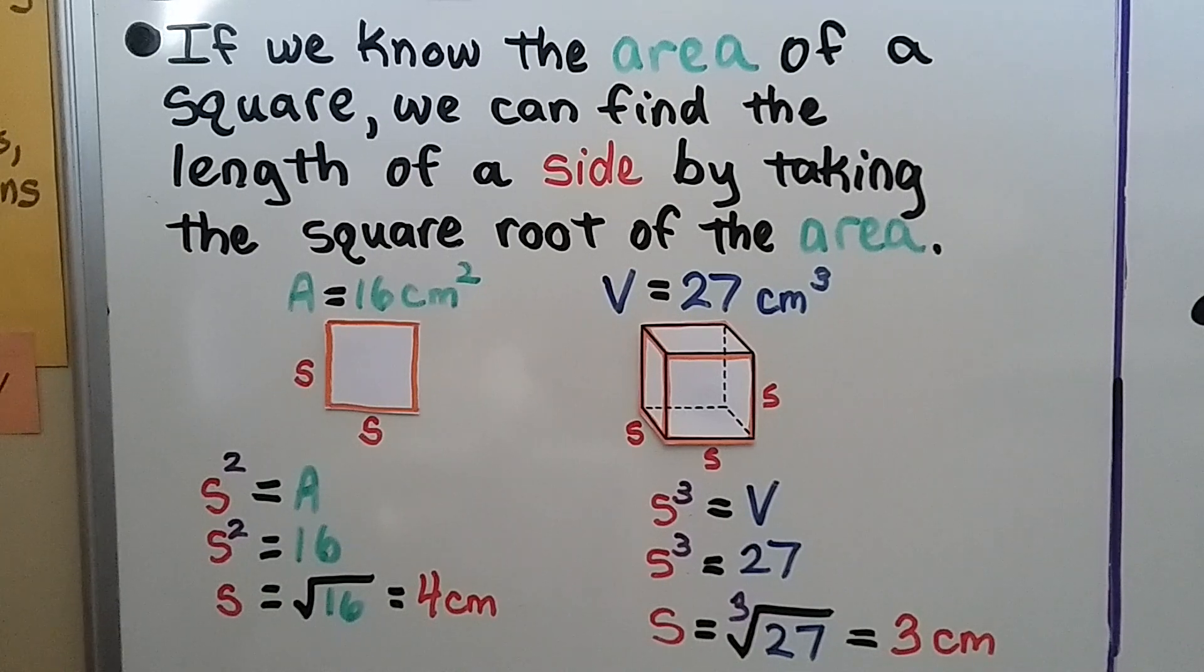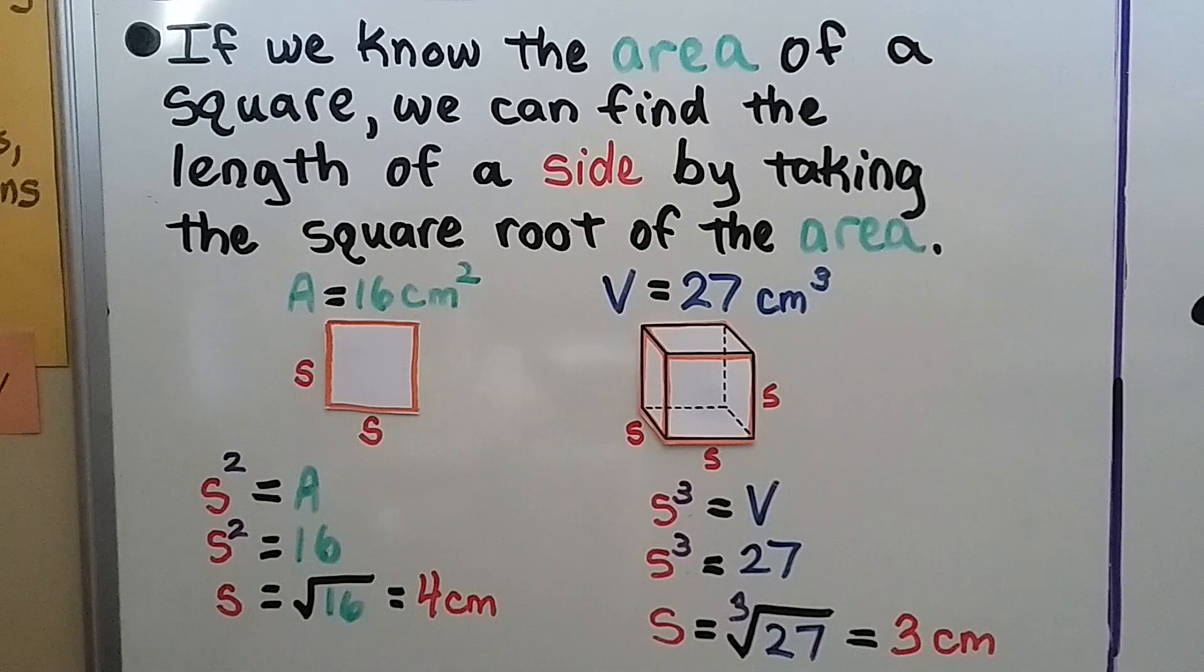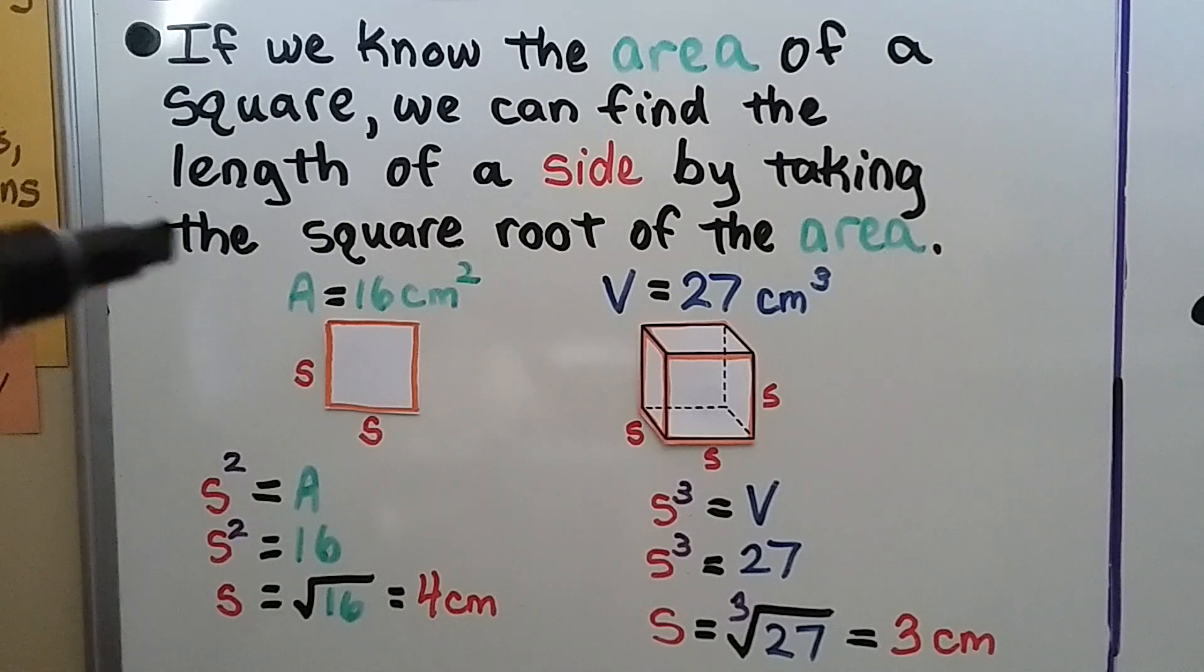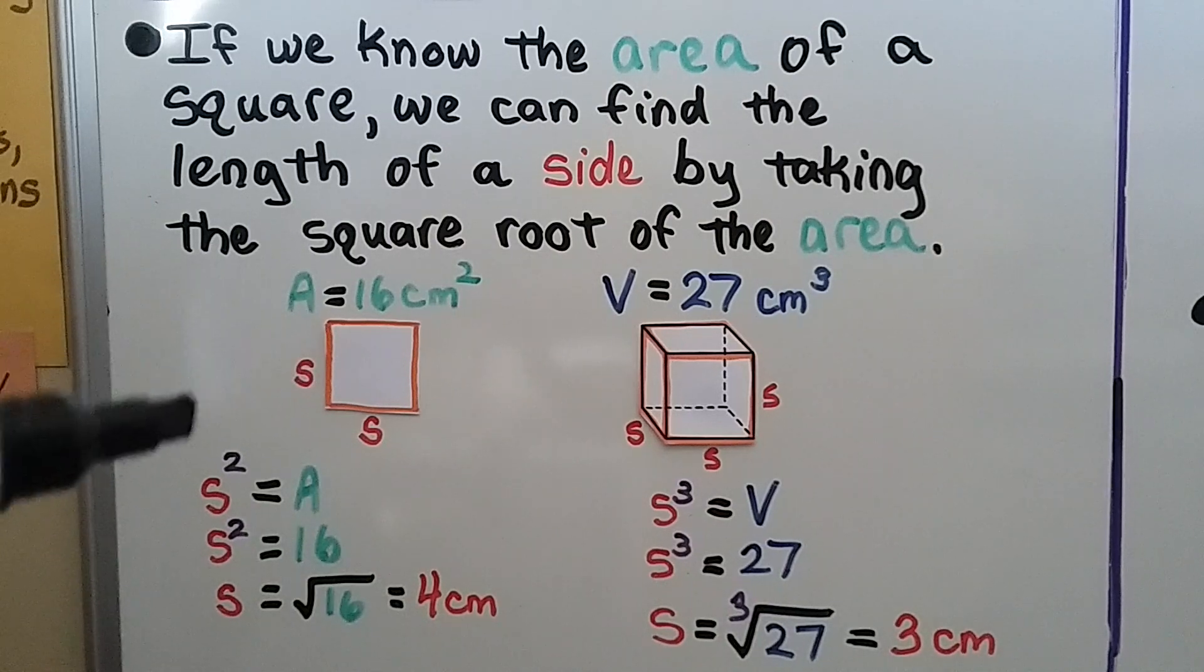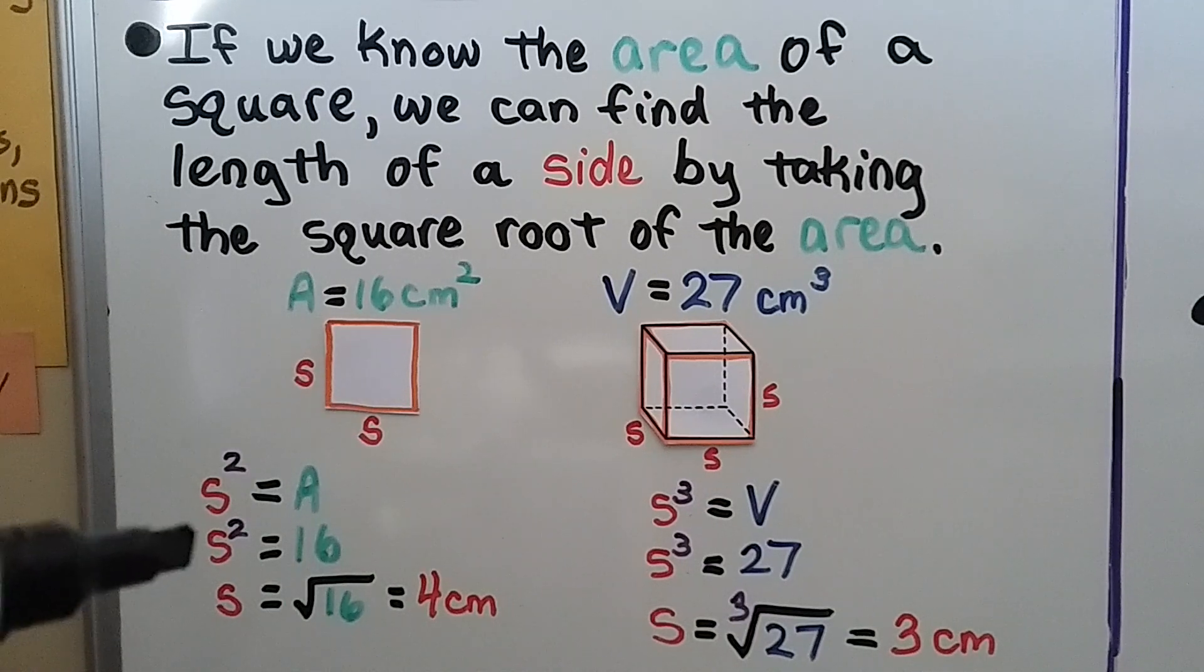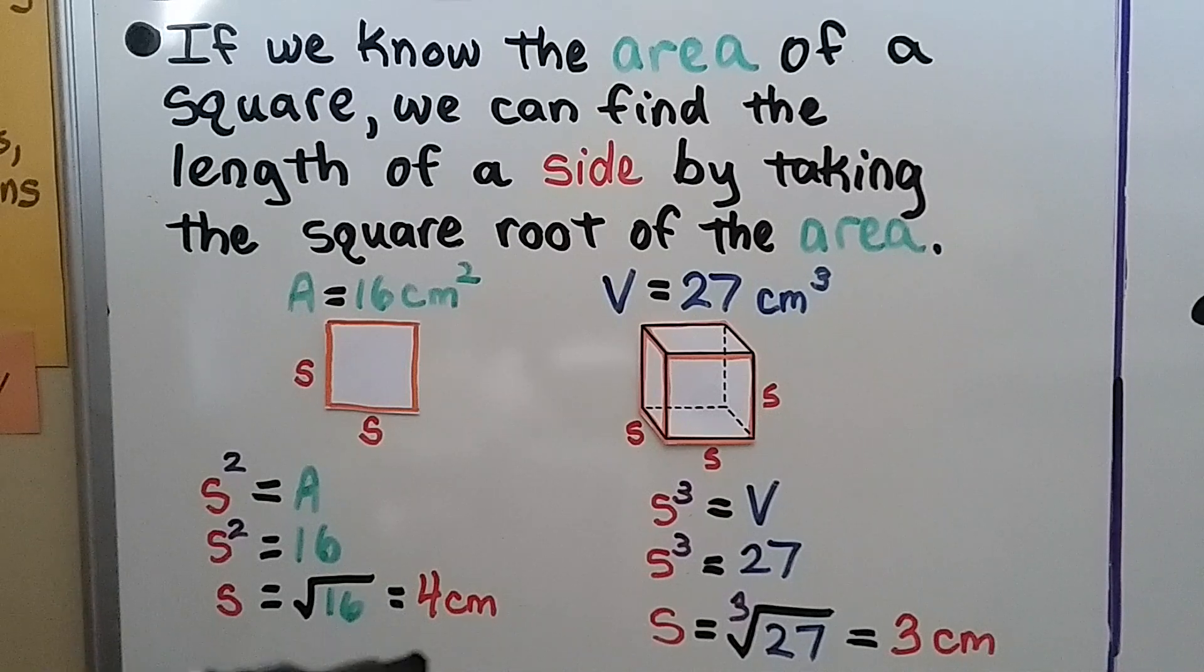If we know the area of a square, here it's given that it's 16 centimeters squared, we can find the length of a side by taking the square root of the area. We know the formula for the area of a square is side squared, the side times the side. If we're given 16 as the area, we could take the square root of 16 and find that the side is 4 centimeters.